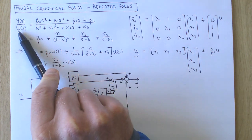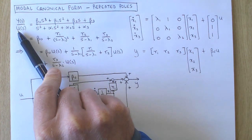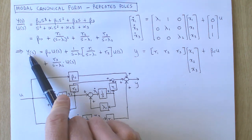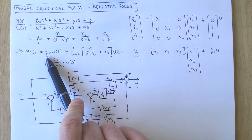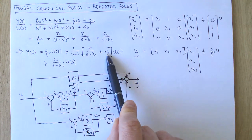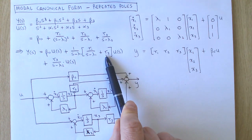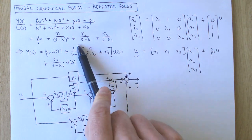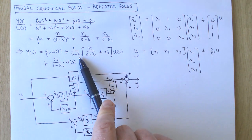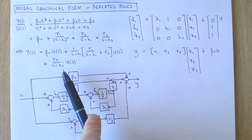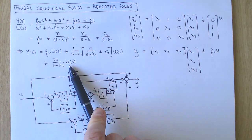We can now multiply with u of s, and we get the following expression for the output y: beta 0 times the input u, the two terms that have the same root at lambda 1 with the common factor 1 over s minus lambda 1 taken out, times the input u, and the remaining term times u.